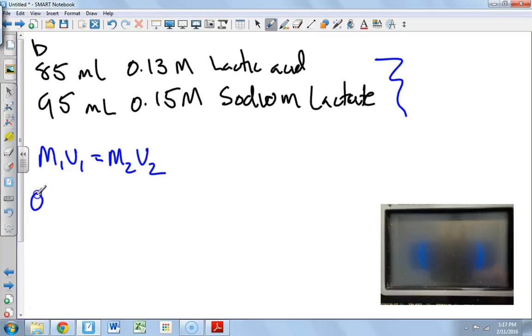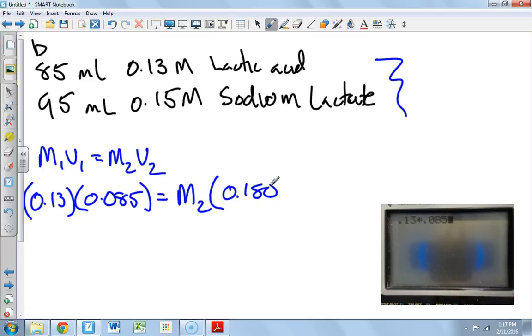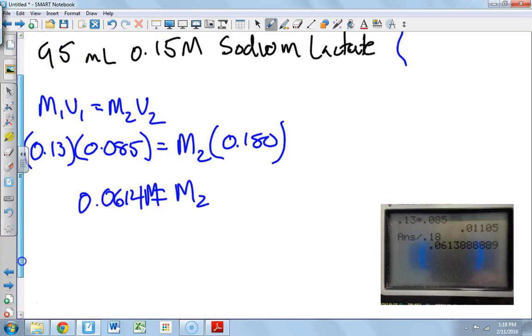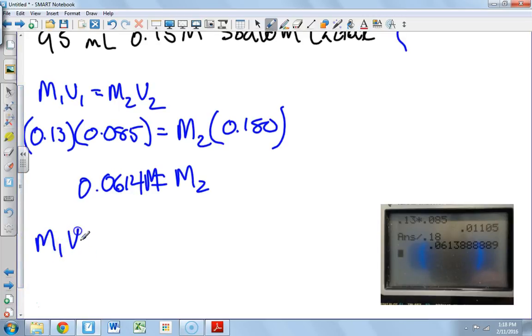So this is molarity 1, that's 0.13 times volume 1, 0.085 equals M2, that's what we're trying to do. What's our new molarity after these two things are mixed? So we go 0.13 times 0.085 divided by 0.18. And when we do that, we get a new concentration. After this thing has been diluted, we get a new concentration of 0.0614 molar. That makes sense because we're diluting it over half.